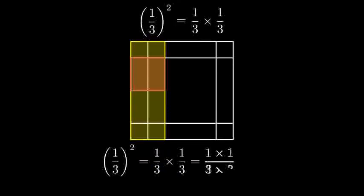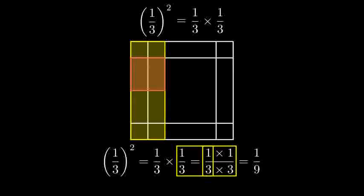Let's see how this works algebraically. When multiplying fractions, we multiply the numerators together. One times one equals one. And we multiply the denominators together. Three times three equals nine.